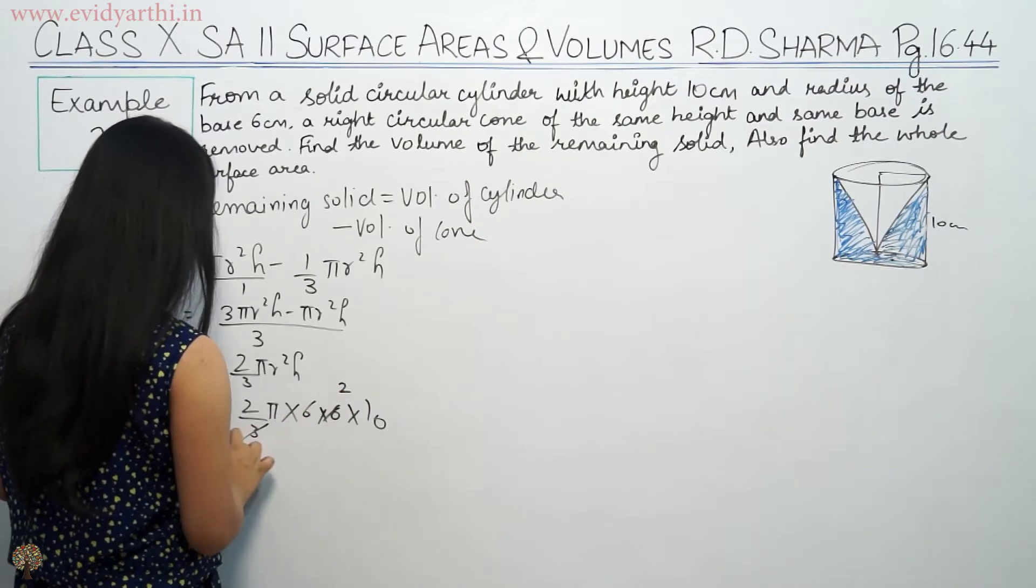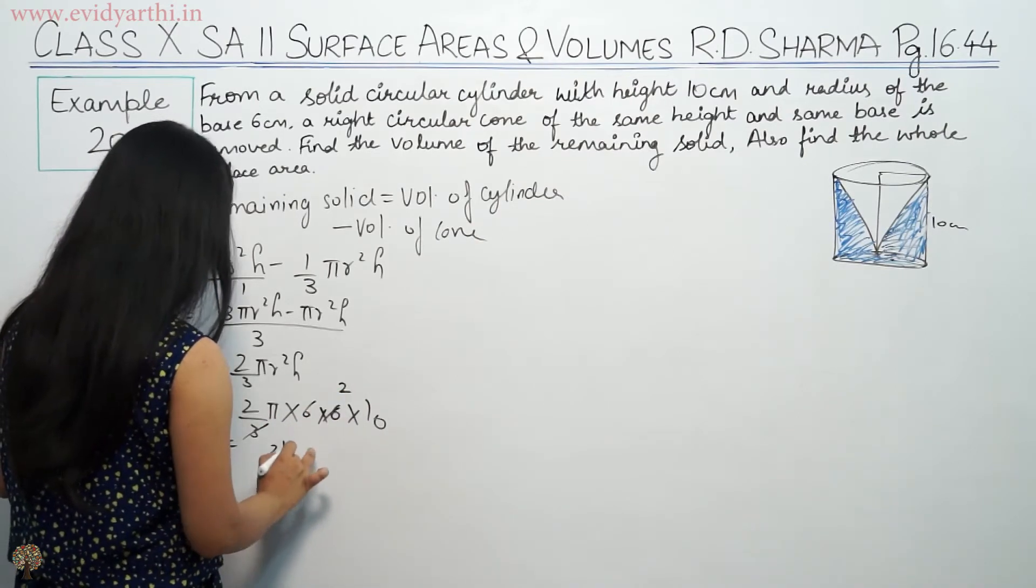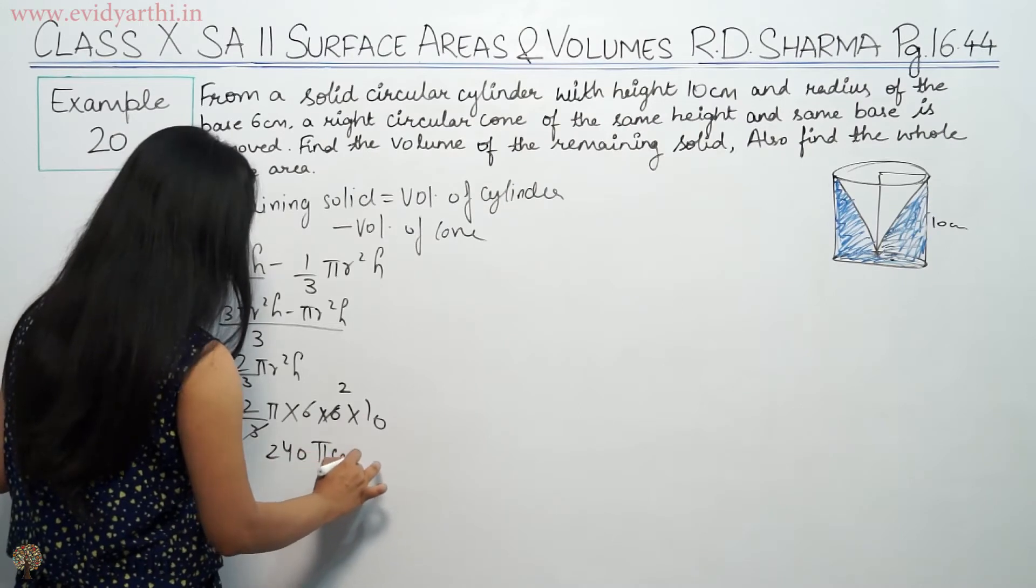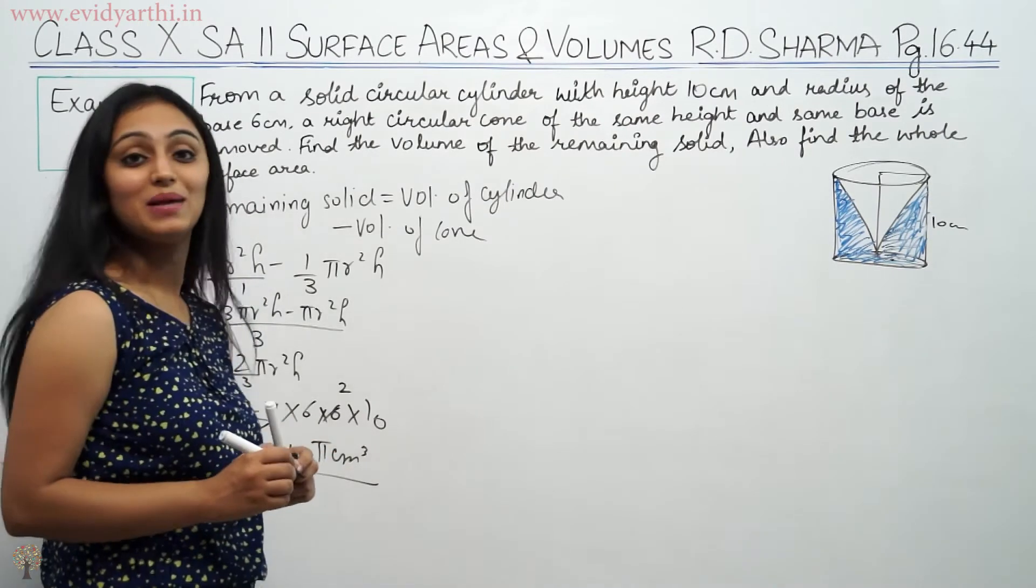Simplifying: 2/3 times π times 36 times 10 equals 240π cm³. This is the volume of the remaining solid.